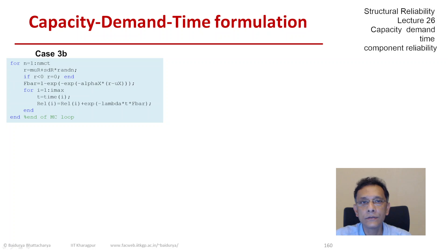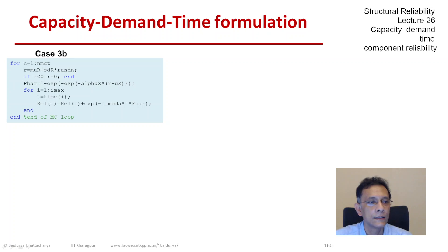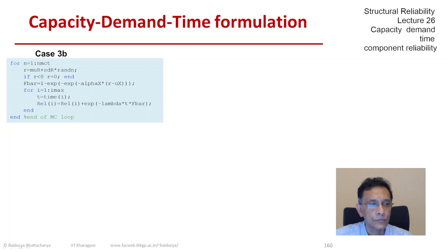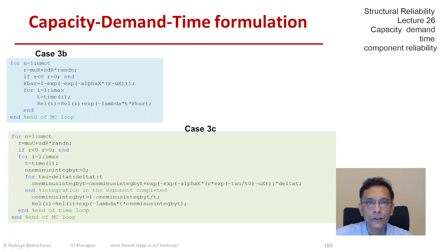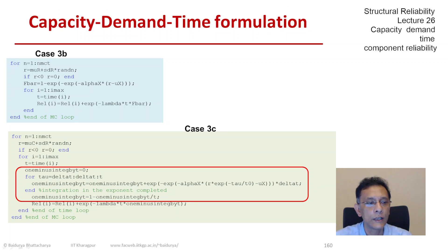The code is basically the same as in case 3B where there was no aging — I have just copied the part of the code which is going to change. In case 3B, reliability was computed as exponential of minus lambda t times f-bar, where f-bar is 1 minus CDF of the load. In case 3C, that single line has been replaced: the f-bar computation is now an integration of f_Q evaluated at c·d(tau), integrated over 0 to t.